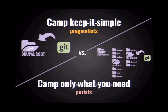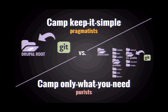So this is the problem space — the conversation that's been happening. You have two different camps in the Drupal community. The first is Camp Keep It Simple — I'm labeling them the pragmatists. They want things to be simple, don't want any additional headaches, and feel like this approach does the job well. The other is Camp Only What You Need — I'm labeling them the purists. They are the engineers and architects who don't like the fact that in the other model you end up tracking a bunch of stuff you're never actually concerned with.